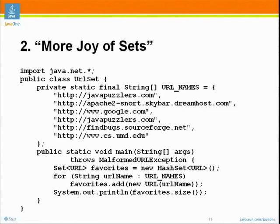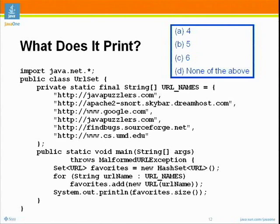Your choices are four, five, and six. And of course the ever-popular none of the above, which could mean a different number, could mean throws an exception, could mean varies from run to run. Audience, how many think this prints choice A, four? How many for choice B, five? That's my choice. How many people for choice C? The great bulk of you — six.